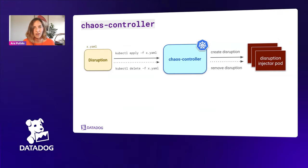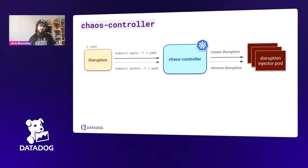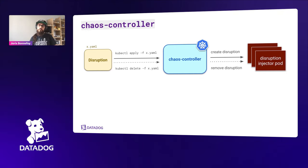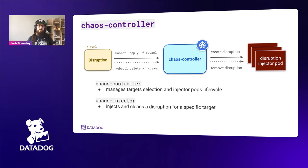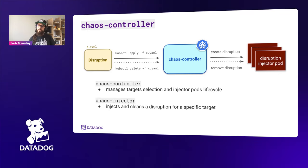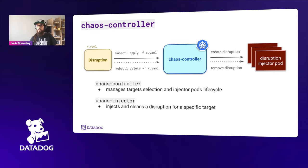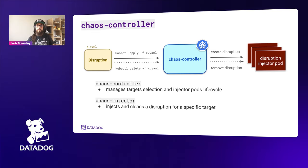At a high level, the Chaos Controller works simply: you have a disruption — a Kubernetes resource in a YAML manifest. You apply it, and it creates injector pods that inject the failures. When you delete the disruption, the injector pods clean up and go away. There are two main components: the Chaos Controller itself manages injector pod lifecycle, and the Chaos Injector — the most complicated piece — is what actually injects and cleans up failures.